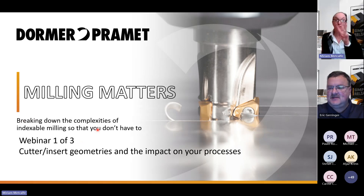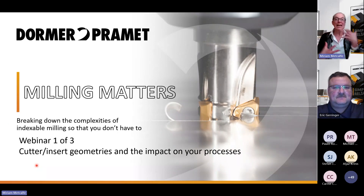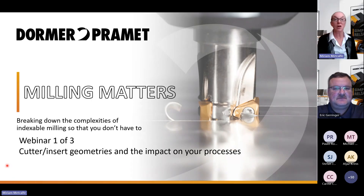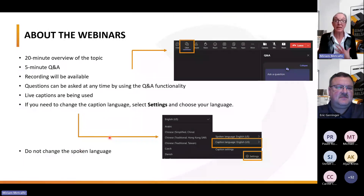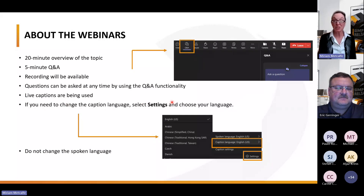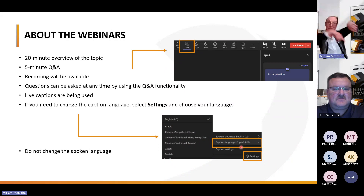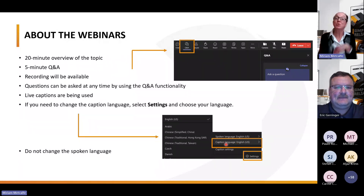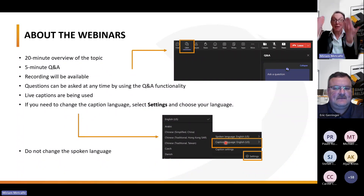This is the first of a three-part webinar series about indexable milling. Before we start, I would like to talk about how to turn on the captions, because this presentation is going to be in English. To support your local language needs, you can change the caption language within the settings area at the bottom right — you'll see a little gear sign there. You can go there and change the caption language to your local language.